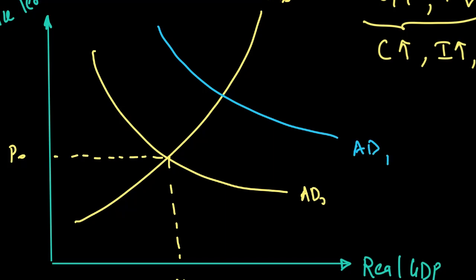And a rise in AD, as you can see, can cause many things to happen. Number one, the GDP to go up. So there is economic growth and we call this actual economic growth because AD curve is shifting to the right.